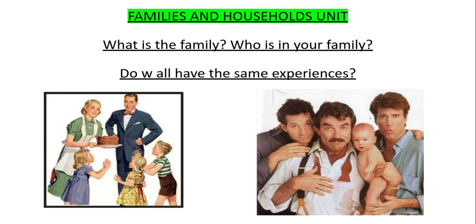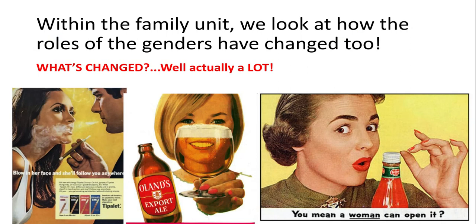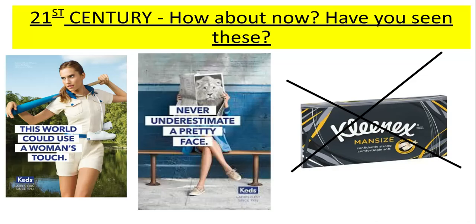The families and households unit looks at what a family is and whether we share the same experiences. We look at how the family has been normally composed of the classic 'cereal packet family' of a mother, father and two children, and how the concept of a family has changed through time and why. In the 21st century, an infographic shows how there are different types of families accepted in society. Within the family unit, we also look at how gender relations have changed — adverts and magazines show the changing attitudes towards women, and in the 21st century there have been societal and cultural differences in how women are treated.